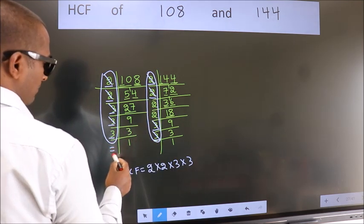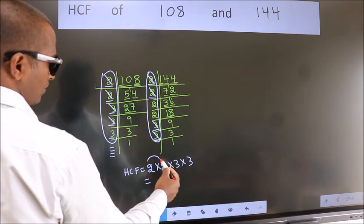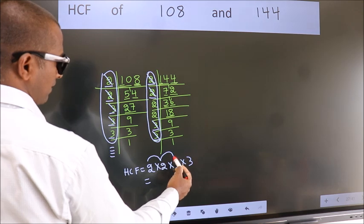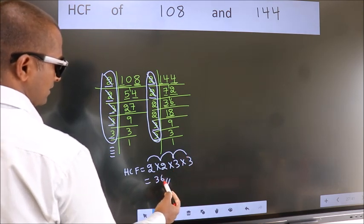No more numbers are left out. So our HCF is 2 into 2, 4 into 3, 12 into 3, 36 is our HCF.